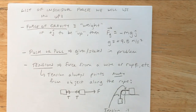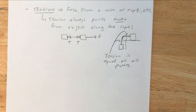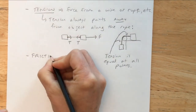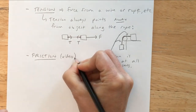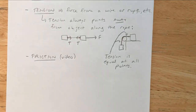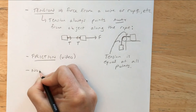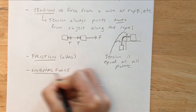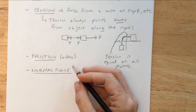So that's three forces: force of gravity, push or pull, and tension. The fourth force is friction — friction gets its own video which you'll watch shortly. The fifth and final force is the normal force. You can use this list — gravity, push/pull, tension, friction, and normal force — as a checklist when doing problems involving Newton's laws. The word 'normal' comes from the mathematical term meaning orthogonal, or perpendicular.